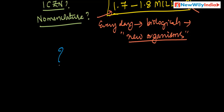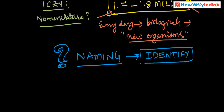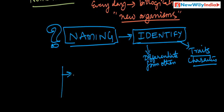This leads to the next concept: there is a huge need for naming. If you want to give a name, first you need to identify the organism — describe its characteristics and differentiate it from others. You have to identify the traits and characteristics — all the required things to identify it. Then you have to give the name. That is a three-step process, and the first step is called identification.